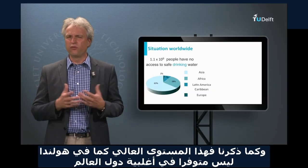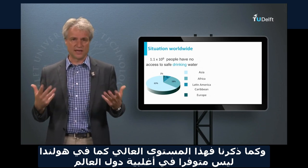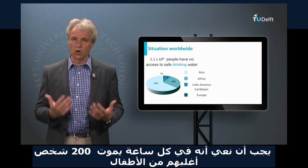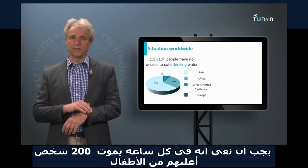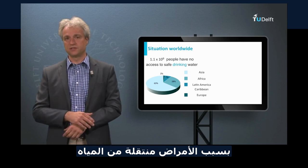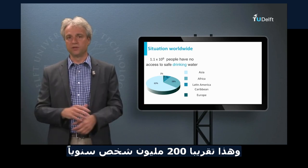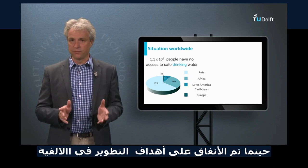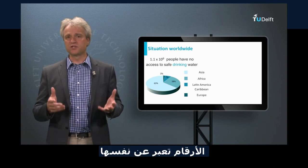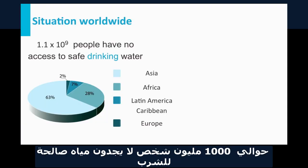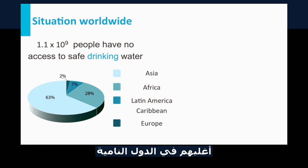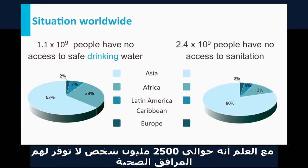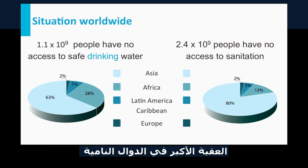The fortunate condition we have in the Netherlands is not yet achieved worldwide. Waterborne diseases are a major killer — worldwide, every hour about 200 people, mainly children, lose their lives because of waterborne diseases, amounting to about 200 million people per year. These numbers were collected by the World Health Organization in the year 2000 when the Millennium Development Goals (MDG) were approved. About 1 billion people do not have access to safe drinking water, particularly a problem in developing countries in Africa, Asia, and Latin America. And about 2.4 billion people do not have access to sanitation, with the major hurdles to be taken in developing countries.